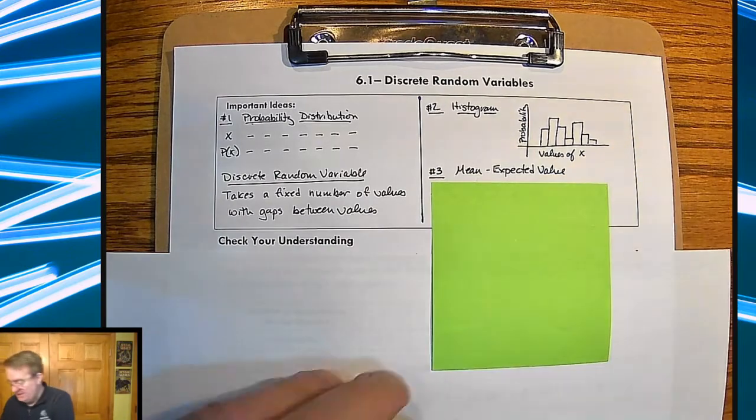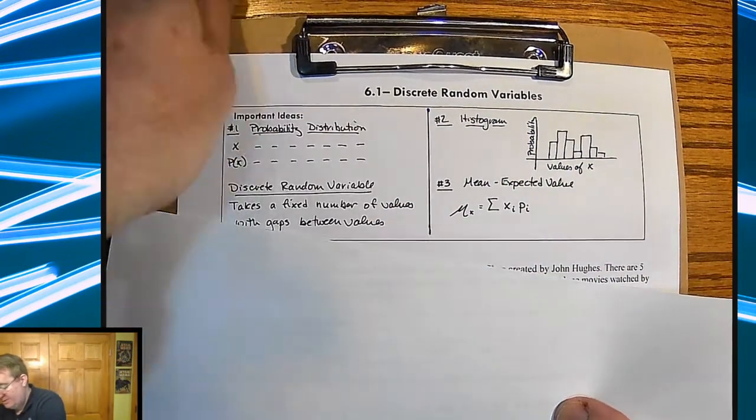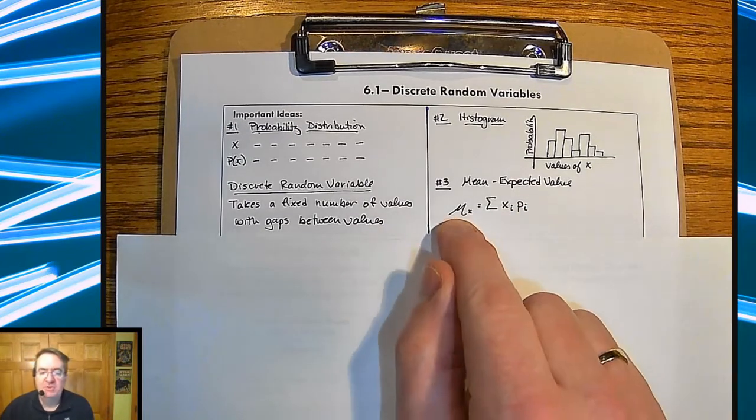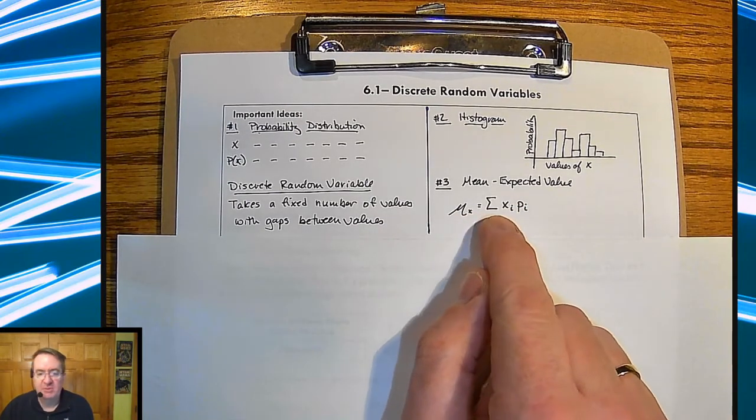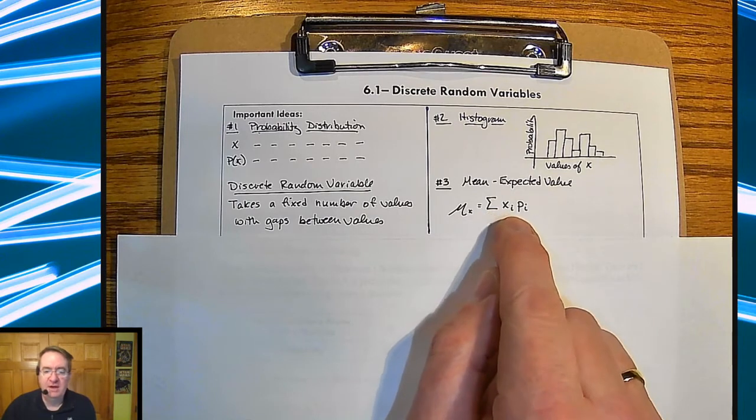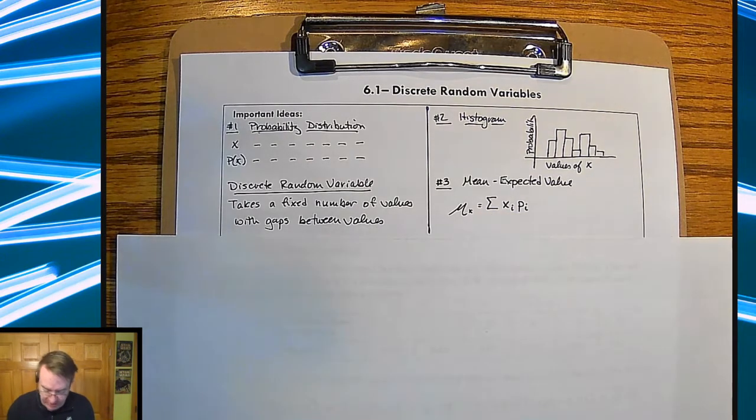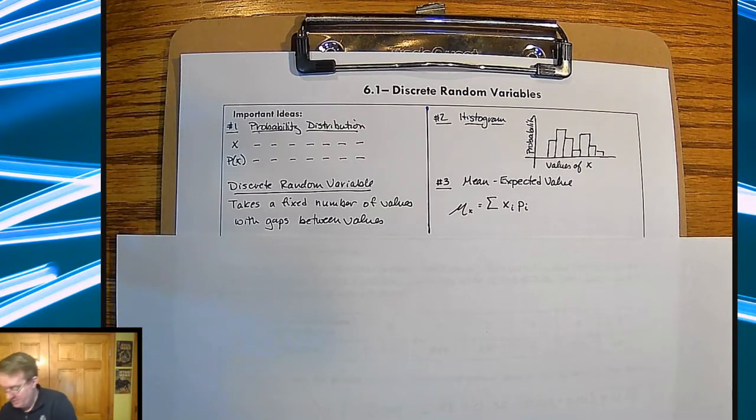And then lastly, in terms of mean and expected value, expected value is a different way of doing the mean of everything. So the mean of x is equal to, remember, the sigma is a summation, and then x sub i times p sub i. So what you're doing here is, remember, i is an index.